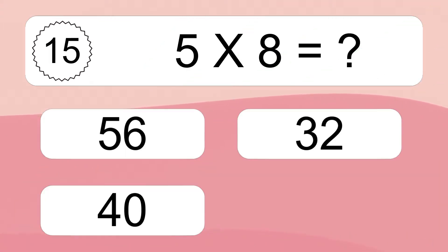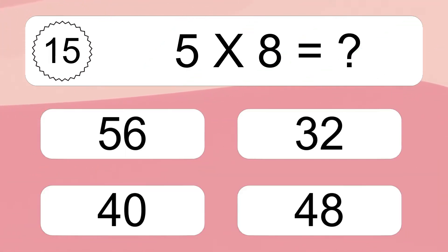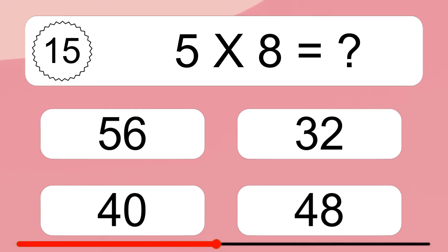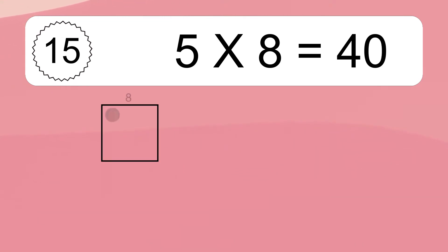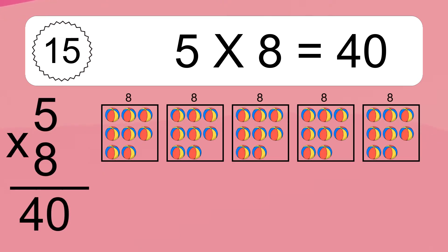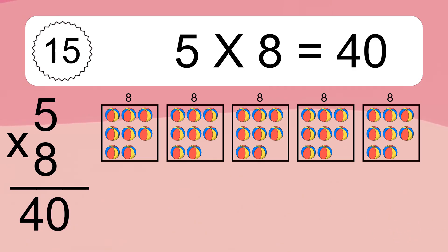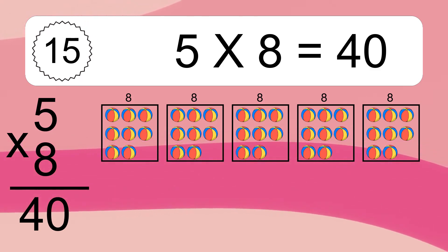Five times eight equals what? Five times eight equals 40. We have five boxes, and each box has eight colorful balls inside. If you count all the balls in all the boxes together, you will have five times eight balls. This equals 40 balls.